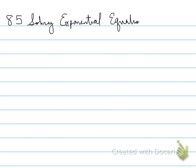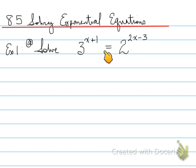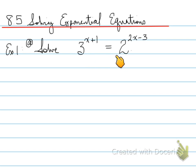Let's look at 8.5: solving exponential equations. Example 1 — we need to solve 3 to the power of x equals 2 to the power of 2x minus 3. When we look at this question, we can see that there are two powers equal to each other. The hard part is that these two powers do not have the same base, so we can't use our usual convention of setting equal powers with the same base. So what's our next strategy?